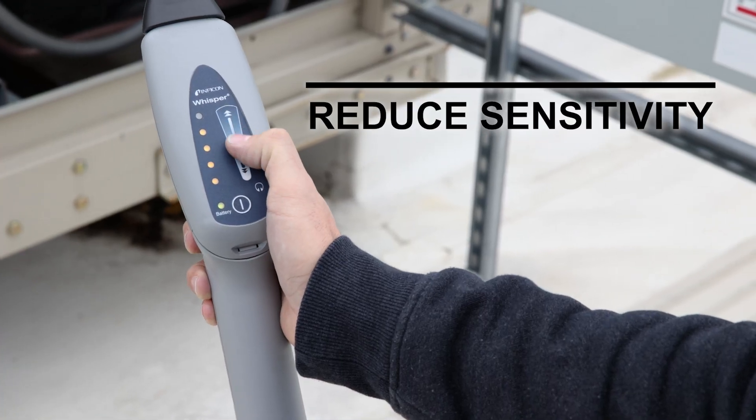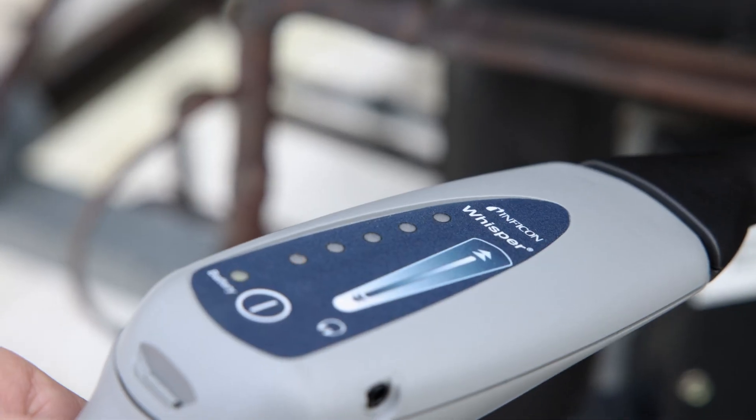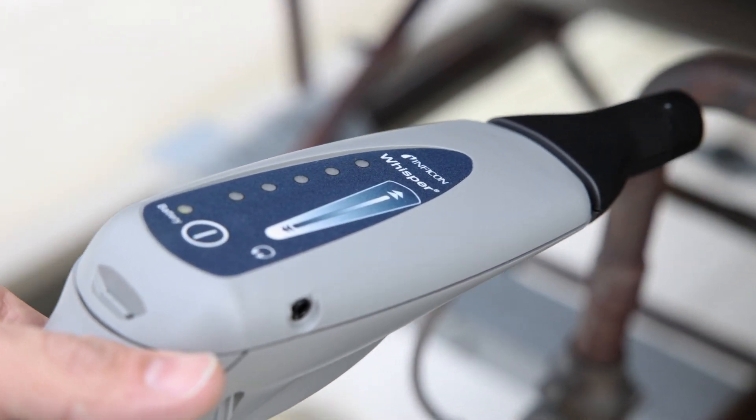On a loud job site, swipe down on the touchpad to reduce the sensitivity. This helps Whisper ignore unwanted background interference.